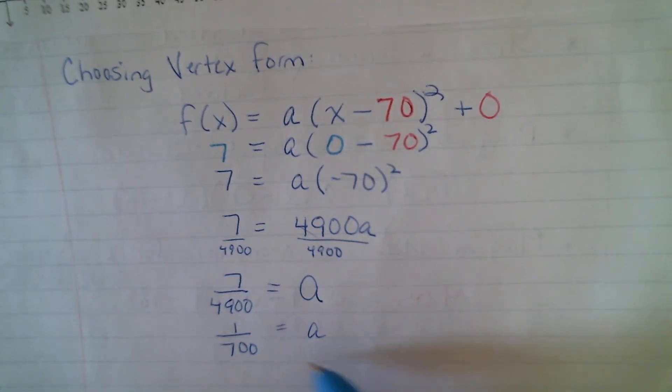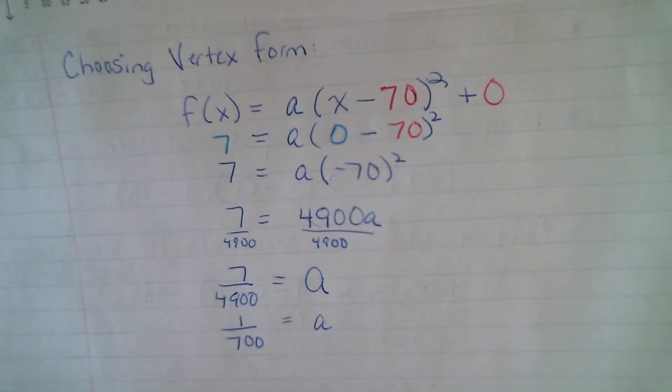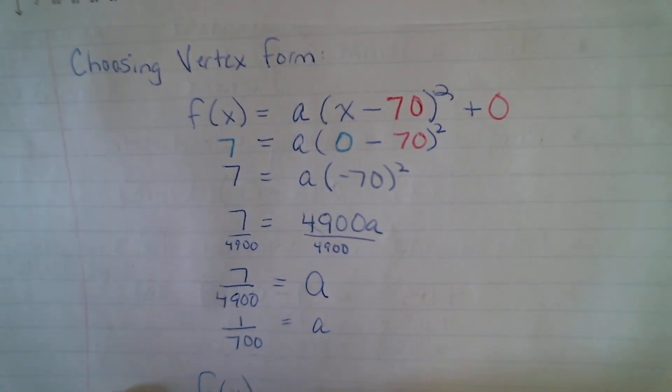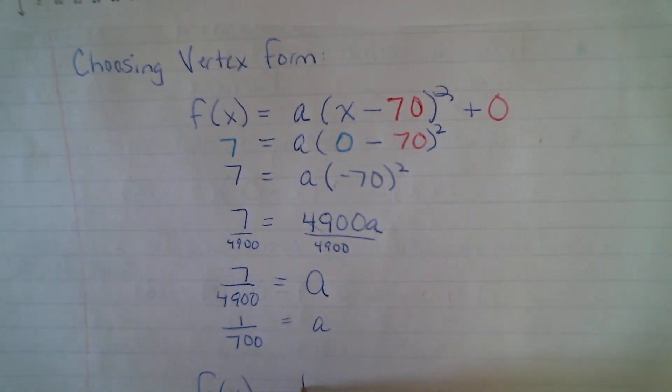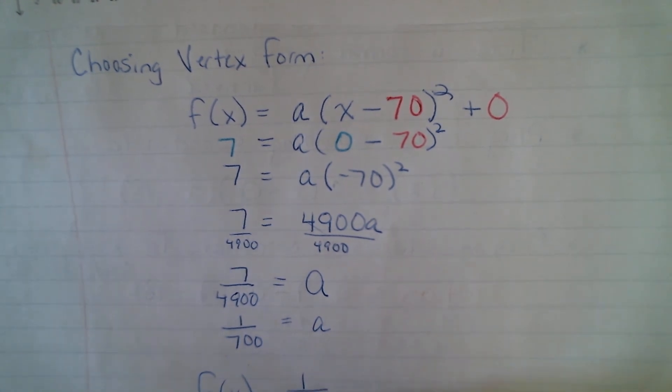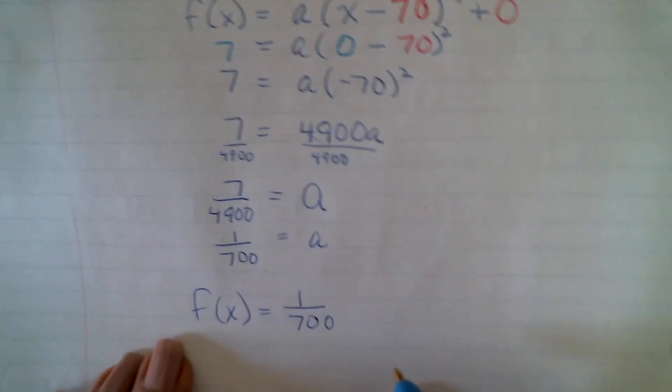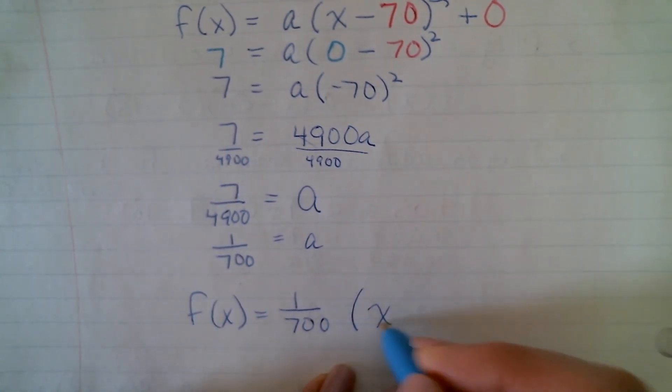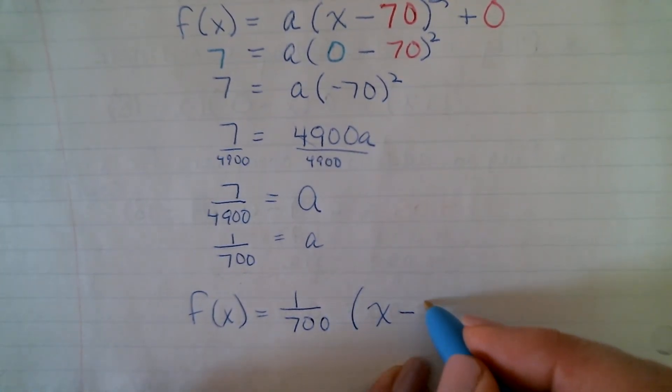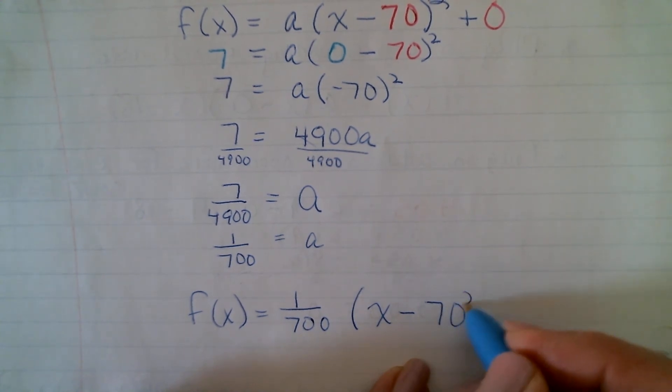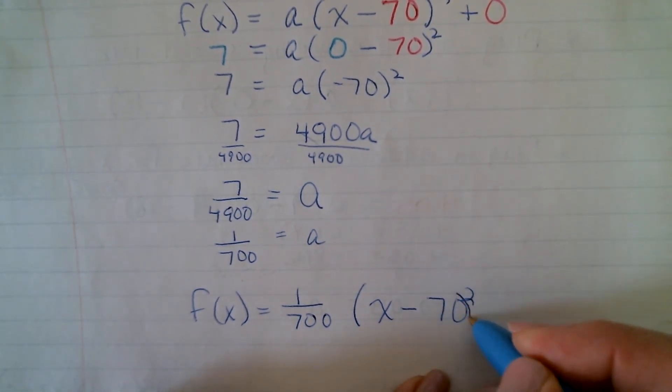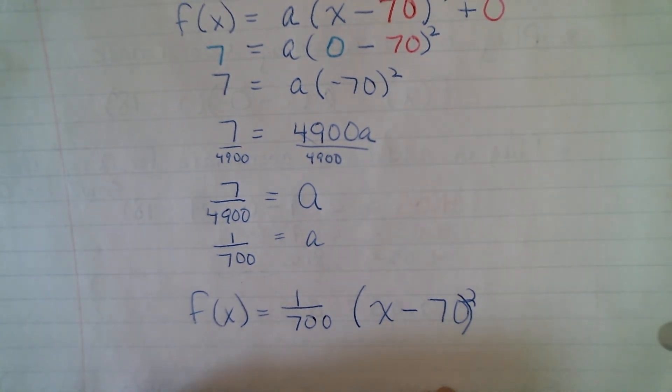So, now that I know what a is, I can go back to, like I said, what our chosen format was, vertex form. I know that a is 1 over 700. We knew it would be a fraction, we know it's positive, right? Because it opens upward. x minus, and in our case, 70. And I could say plus 0. Sorry, squeeze that in. But there's really no need to do that, right?